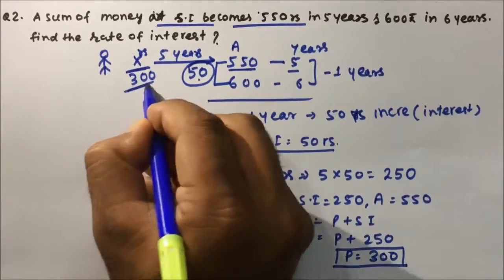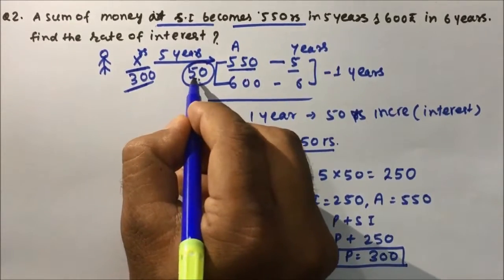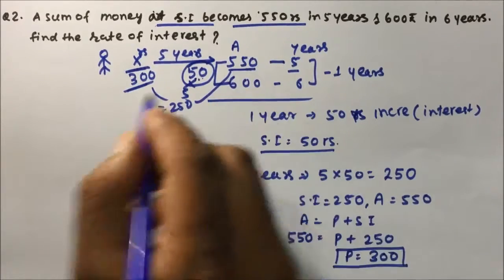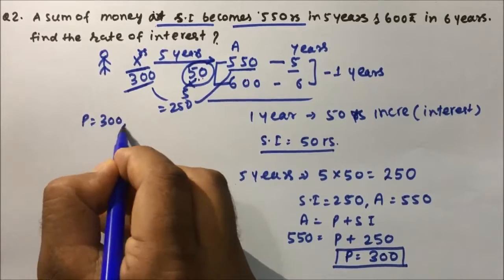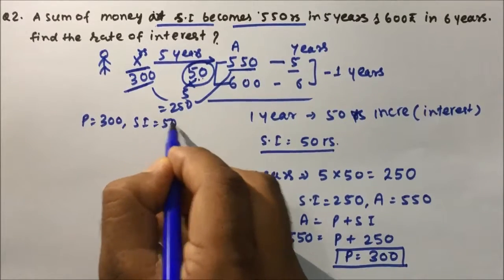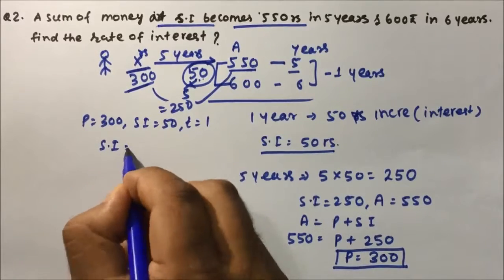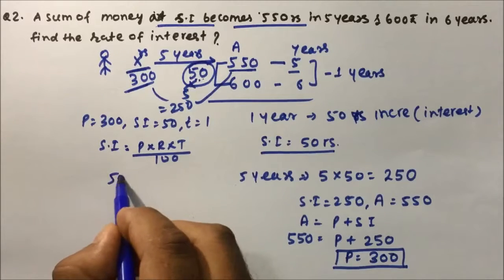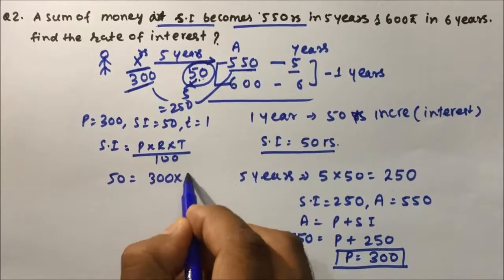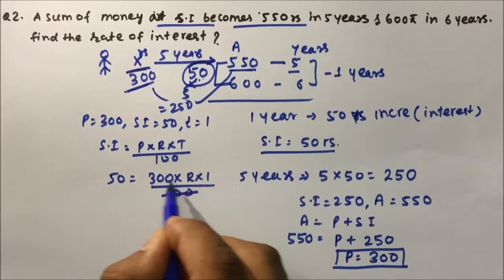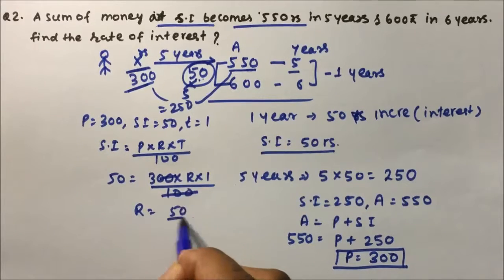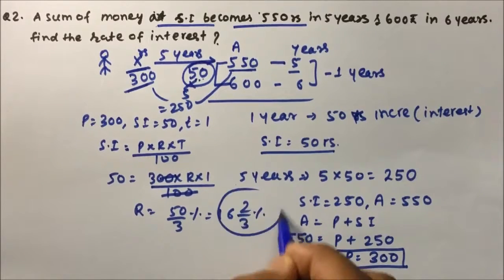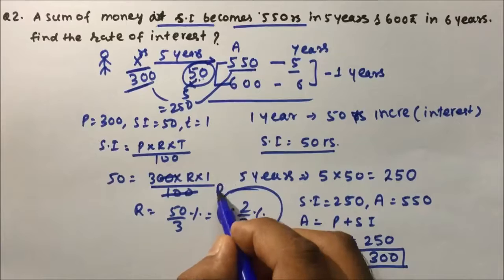That person invested 300 rupees, and in 5 years 5 × 50 = 250 interest, totalling 550. Now principal is 300, simple interest is 50 rupees, time is 1 year. Applying simple interest = P × R × T ÷ 100: 50 = 300 × R × 1 ÷ 100. Cancelling zeros, rate = 50/3 percent, that is 16 and 2/3 percent, which is the rate of interest.